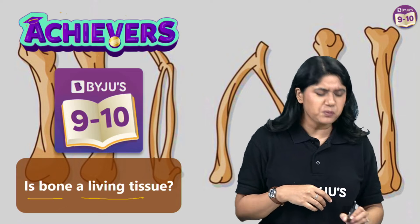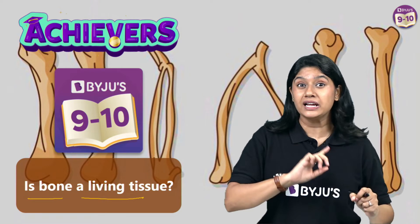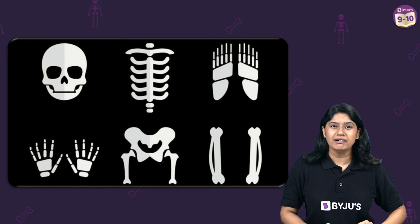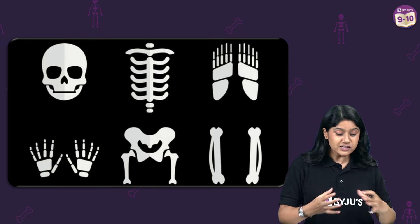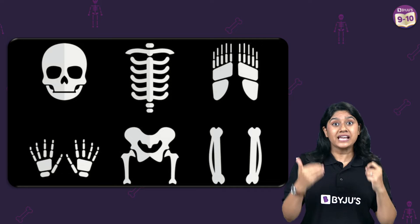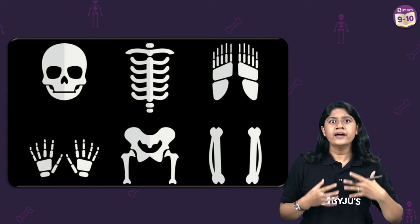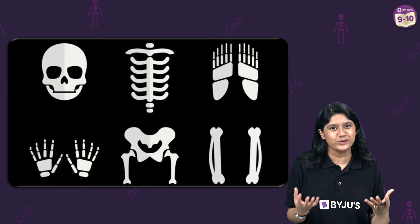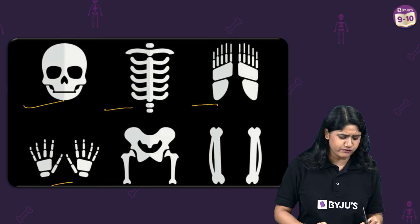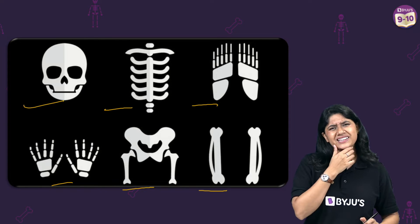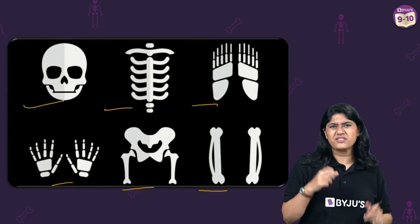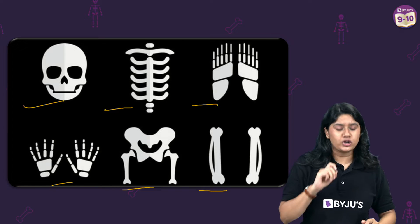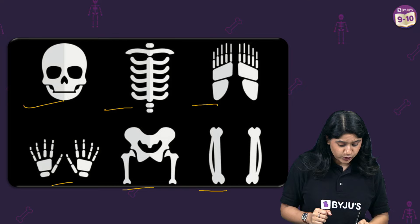It's a very interesting question, right? When we talk about the bone we know that it's really very hard, and we have to find out whether it is a living tissue or not. We know that bones are a really very important part of our whole body. Because of these bones, they come together and form the skeleton, and our skeleton provides us the framework. On top of that we have different layers of muscles and skin, and that's how we are made. So we know that bones are really very important, and when we look at the bones, we can say that they appear kind of dead, because they are really very hard. But let's find out whether that's true by taking a closer look at the bone.